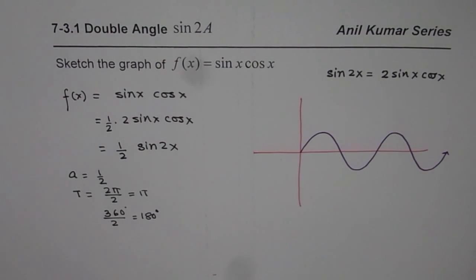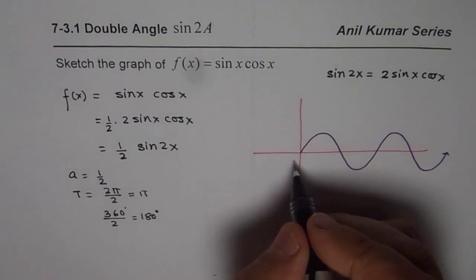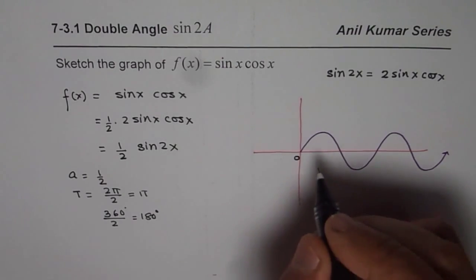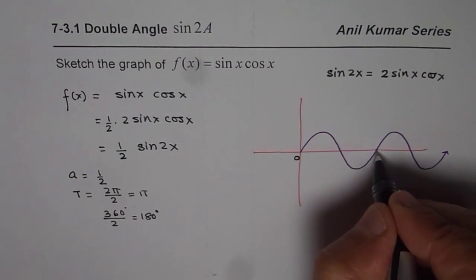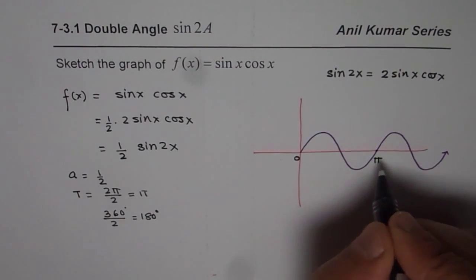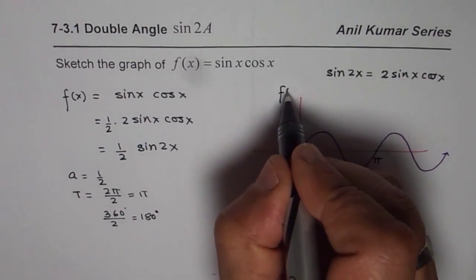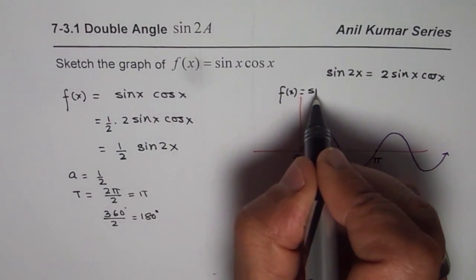On and on it goes. Where what we have here is if it is starting from 0 then the time period is pi. That is the function for us sine 2x.